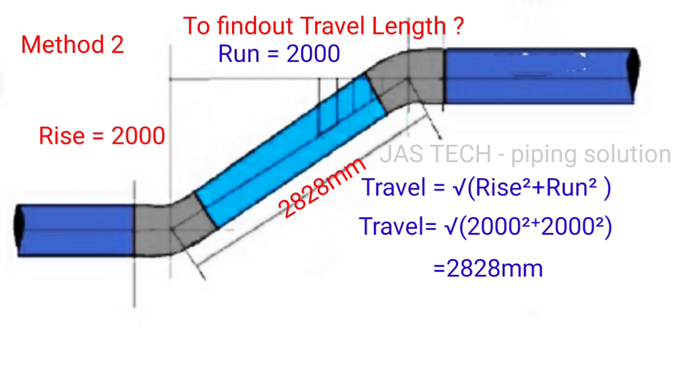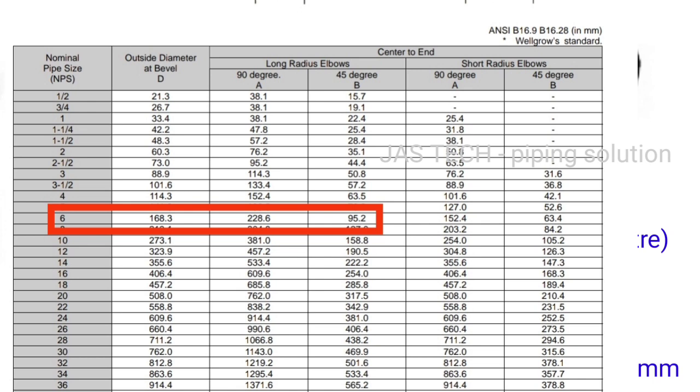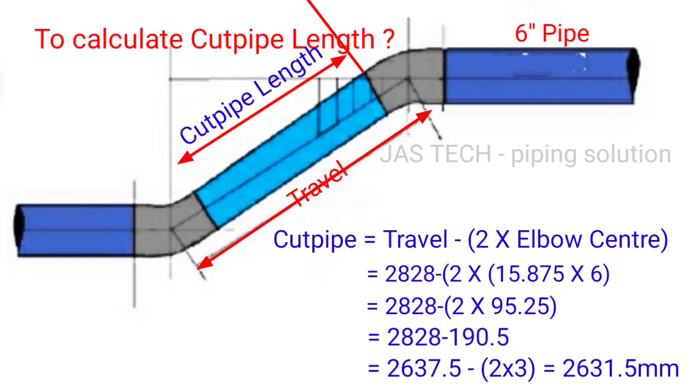Final formula to calculate cut pipe length: cut pipe length equals travel minus 2 times elbow center. Travel distance we already know is 2828 mm.